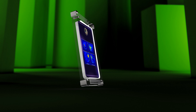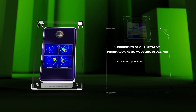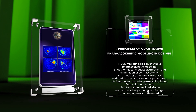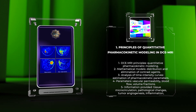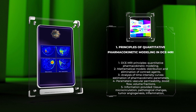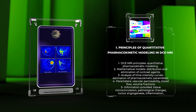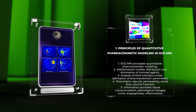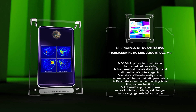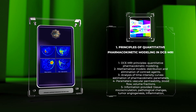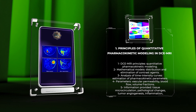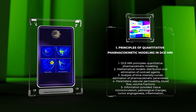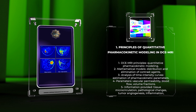To truly understand DCEMRI, it is important to grasp the principles of quantitative pharmacokinetic modeling. This approach involves developing mathematical models that describe the distribution and elimination of contrast agents within the body. By analyzing the time-intensity curves obtained from DCEMRI images, we can estimate key pharmacokinetic parameters such as vascular permeability, blood flow, and volume fractions. These parameters provide valuable information about tissue microcirculation and pathological changes, enabling us to assess tumor angiogenesis, inflammation, and treatment responses.